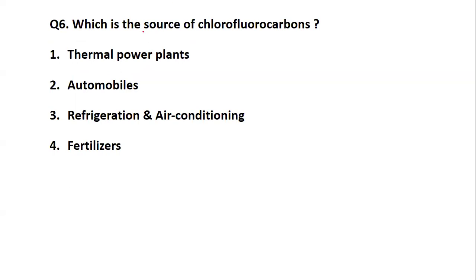Question: which is the source of chlorofluorocarbons (CFCs)? This topic is very common in UGC NET examination under People, Development and Environment — various types of questions can be expected, so make sure you know this well. The options are thermal power, automobiles, refrigerators, or fertilizers. The answer is refrigeration and air conditioning — CFCs come from refrigerating and air conditioning systems.